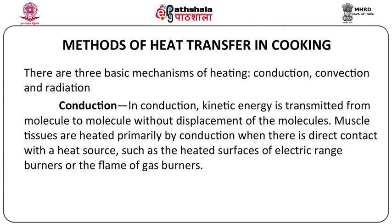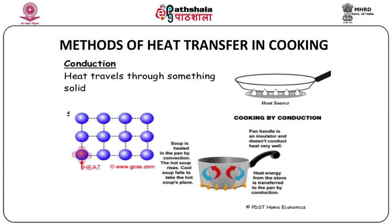In conduction, the kinetic energy is transmitted from one molecule to another without displacement of the molecules. The muscle tissues are heated primarily by conduction when there is direct contact with the heat source, such as the heated surfaces of electric range burners or the flame of gas burners. This diagram will help us understand heat transfer by conduction. Heat travels through a solid surface — when you place a pan on a heated surface like a burner, the heat from the source is conducted to the solid surface of the pan, heating the contents.